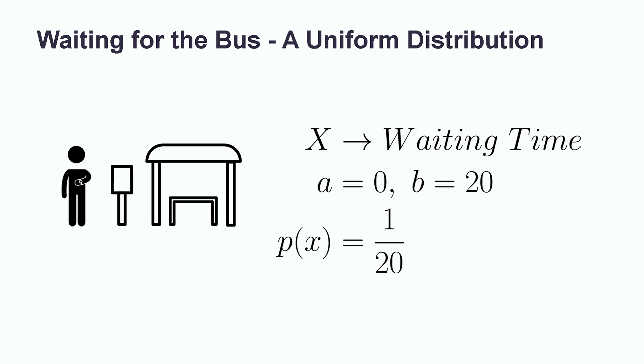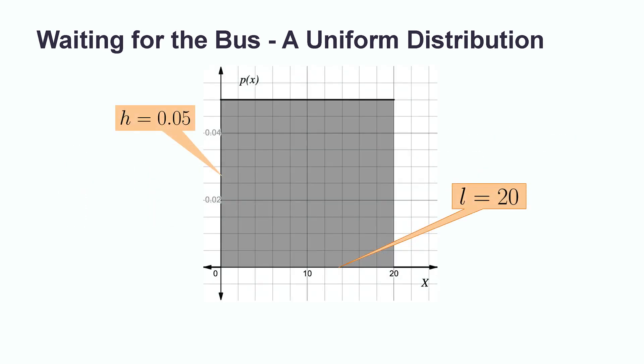On a graph, this is simply a flat horizontal line, indicating that you are equally likely to arrive at any point along the interval. When we observe this distribution on a graph, it is rectangular with a height of 1 over 20, or 0.05, and a length of 20.